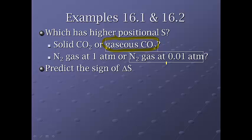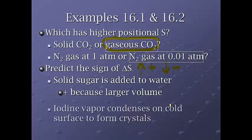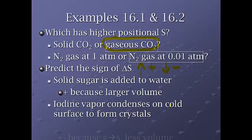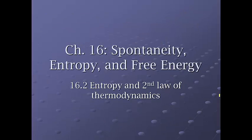Now, if we predict the signs of delta S, this is just, if it's increasing the randomness, it's going to be positive. If it's decreasing, it's going to be negative. Solid sugar is added to water. It's positive because all of a sudden there's a larger volume for the sugar to move around in, or I just think of it as you dump something in and you dissolve it, they now have that much more freedom to move in that aqueous state as opposed to that solid state. If iodine vapor condenses on a cold surface to form crystals, this is going to be negative. Because the gas is turning into a solid, there's less volume and less movement as well. So you have less spontaneity.